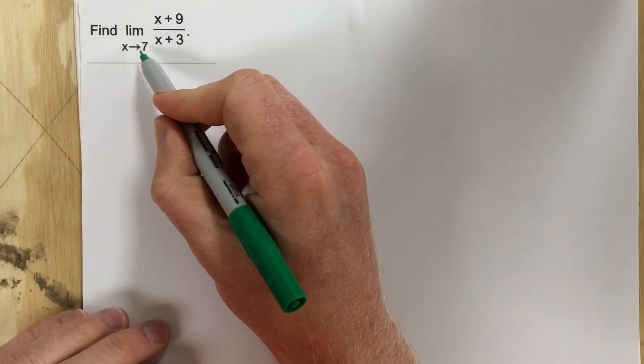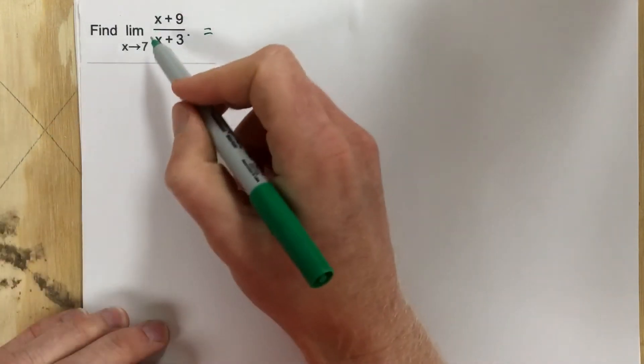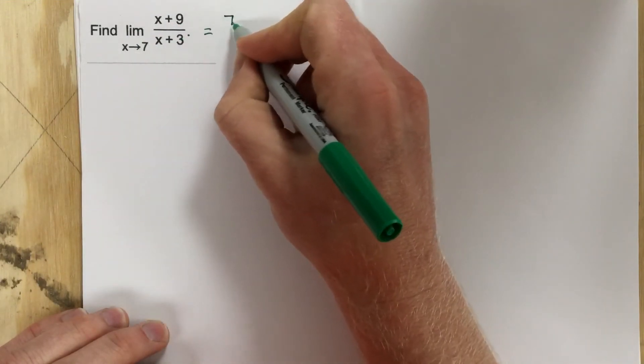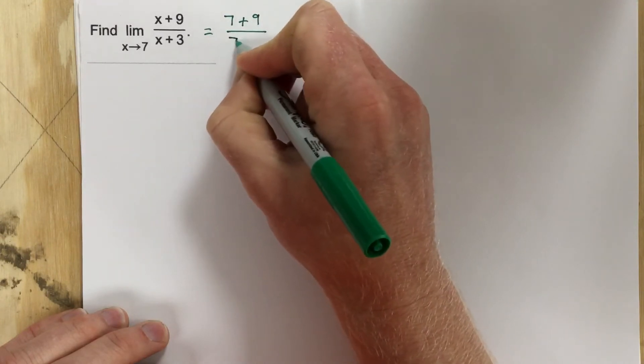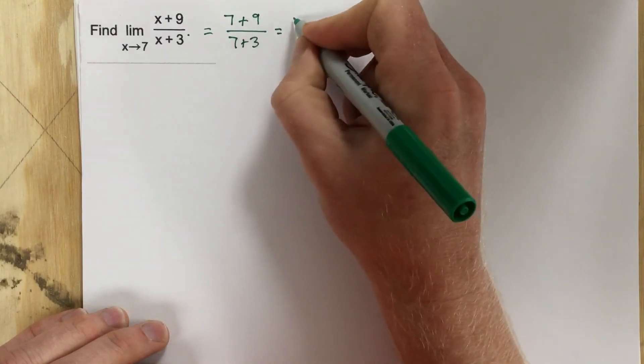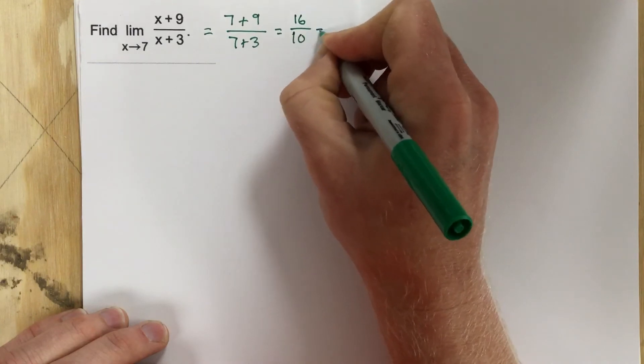So let's check by plugging 7 in here and seeing if we come up with essentially a domain error or a value that will not work. Well, when we plug in 7, we end up with 16 on top over 10. We can reduce that by dividing by 2, we get 8 over 5.